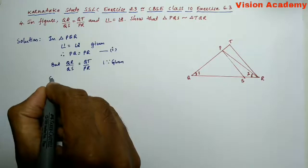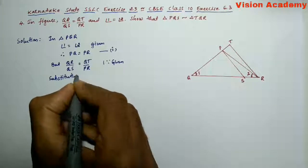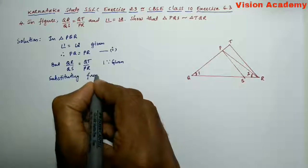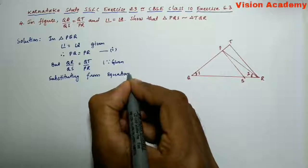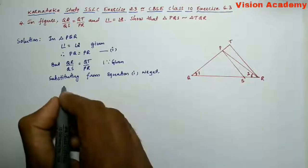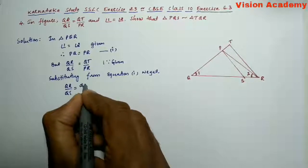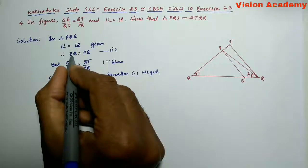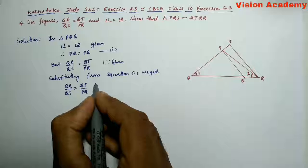Now substituting from equation 1, we get QR by QS is equal to QT, and in place of PR we are going to write PQ, so divided by PQ.